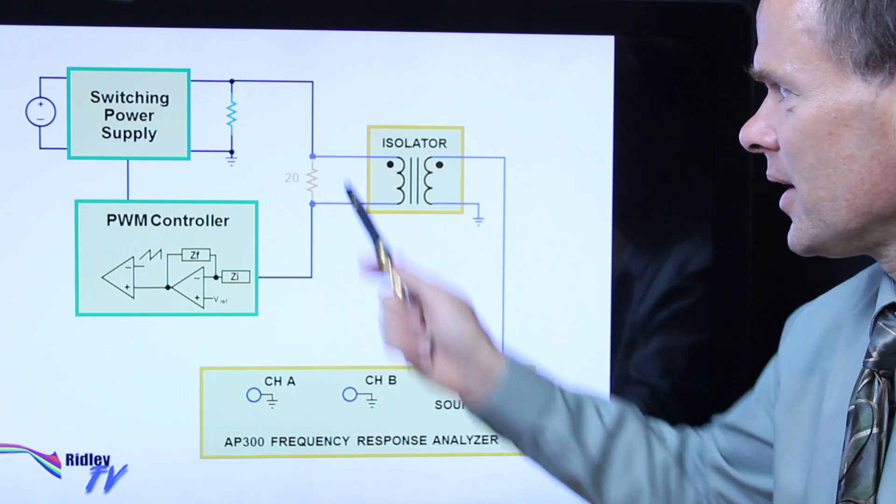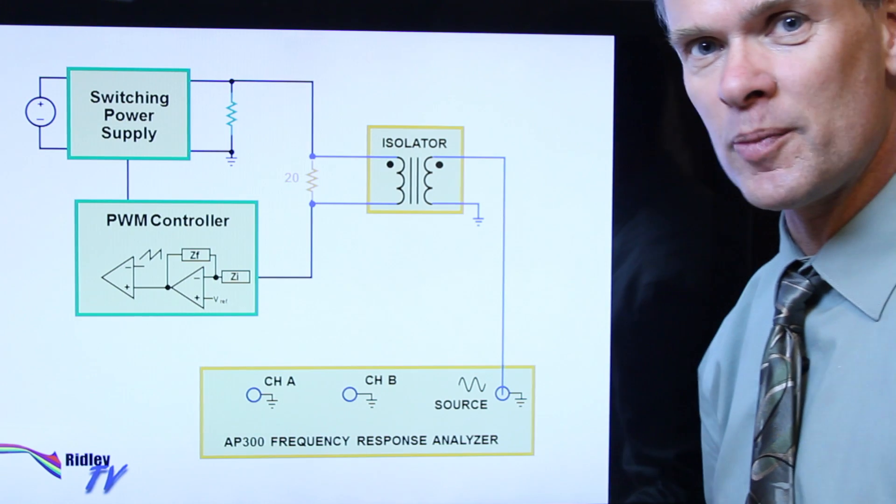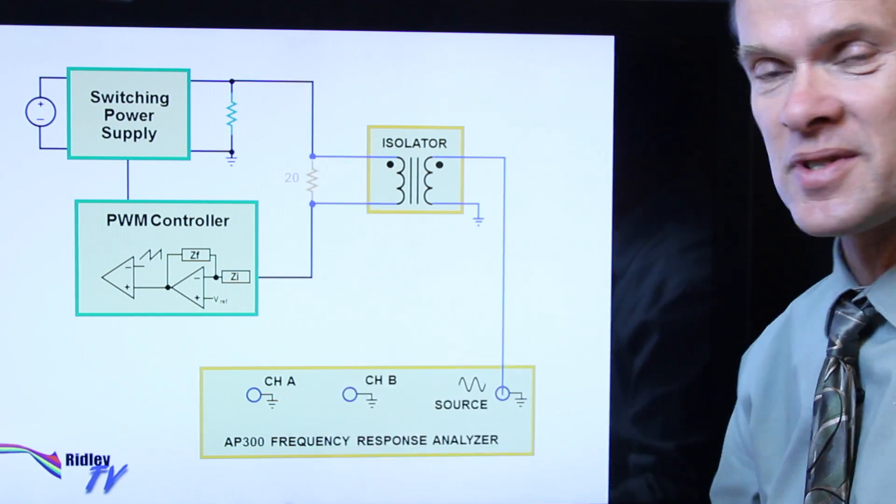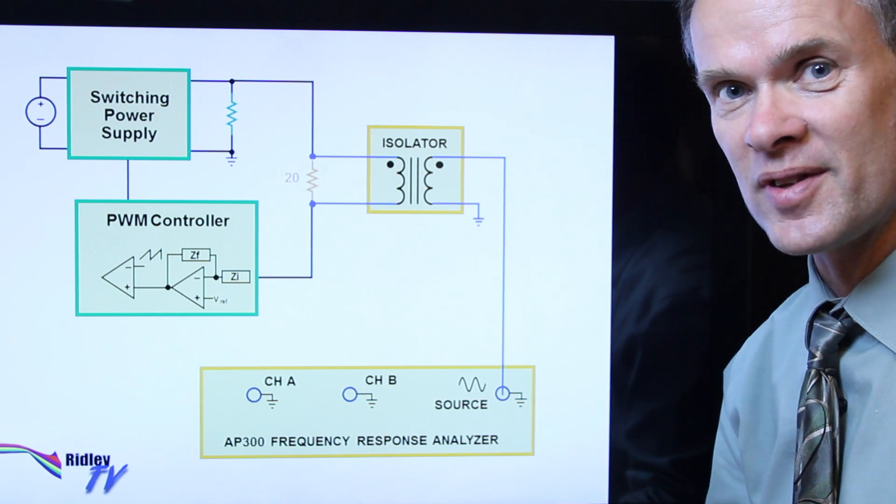This gives a difference in voltage between these two at only one frequency. So what we're actually doing here is breaking the loop just at one injection frequency, and it's kept closed at all other frequencies. That's how we manage to regulate while measuring the open loop of the system.